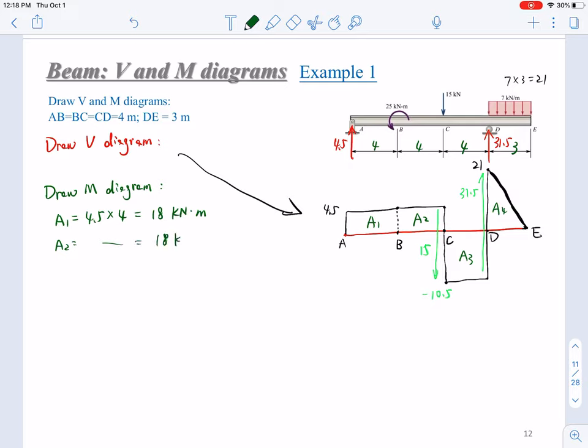And A3 would be negative 10.5 times 4 equals negative 42 kilonewton meter. The A4 will be, you don't have to calculate it, since at the free end, no reaction forces, no added bending moment, it would be zero. So at the right end, it would be zero.